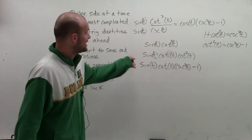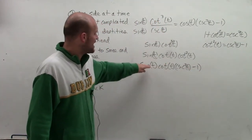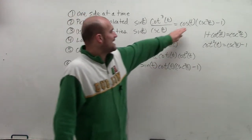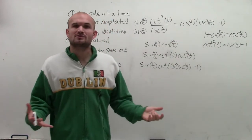So I'm almost looking at the left side equal to the right side. But I have sine of t times cotangent of t. And right there on the right side, they have cosine.